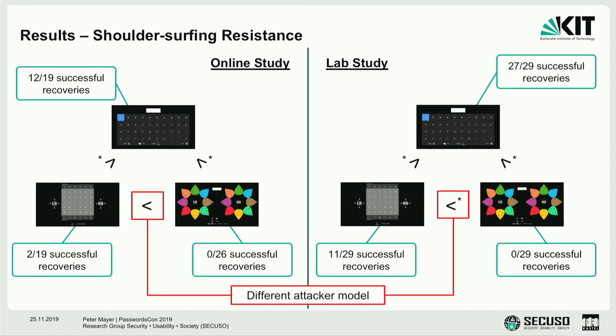Why is there a difference between the two studies? We believe this is due to a slightly different attacker model. In the lab study, participants actually asked us to stop the shoulder-surfing task because they were so frustrated trying to shoulder-surf the color wheel scheme. This makes it more a measure of perceived security, which is somewhat realistic — an opportunistic observer who didn't plan to watch may give up — but it is a different sentiment.